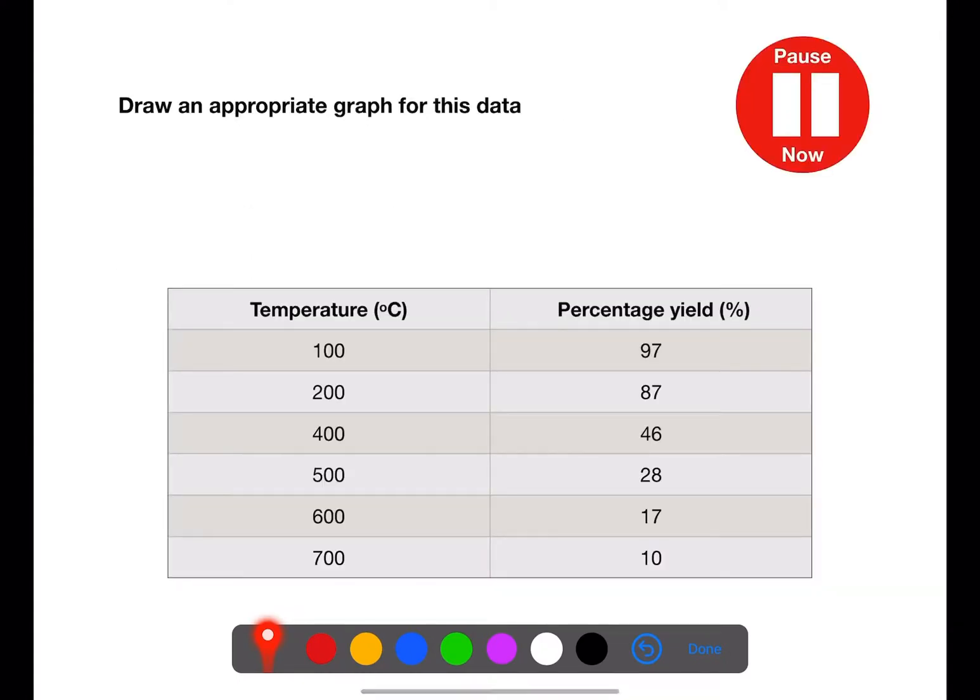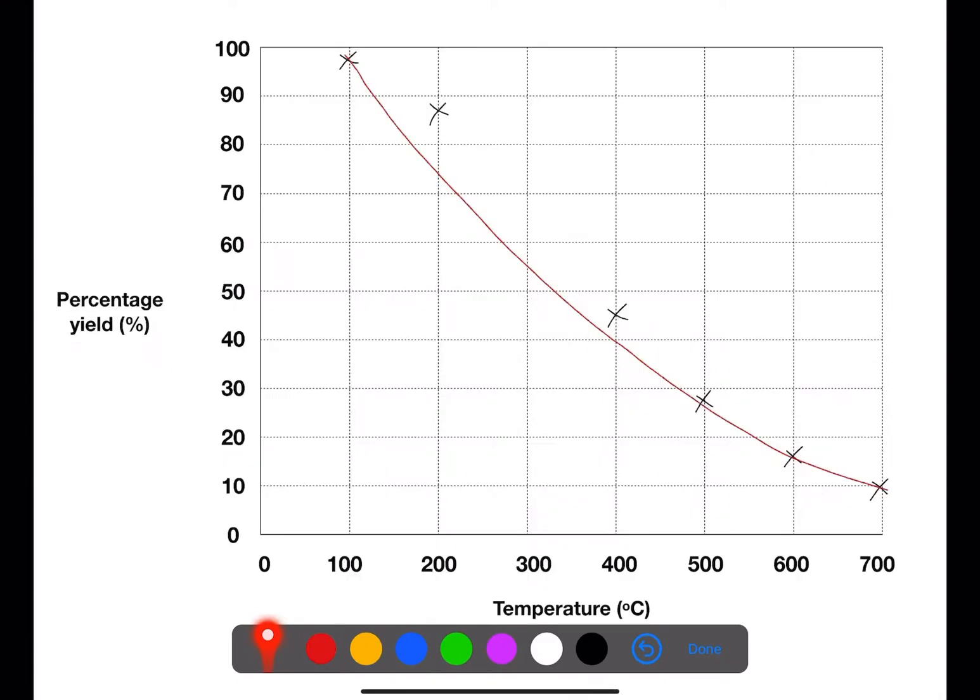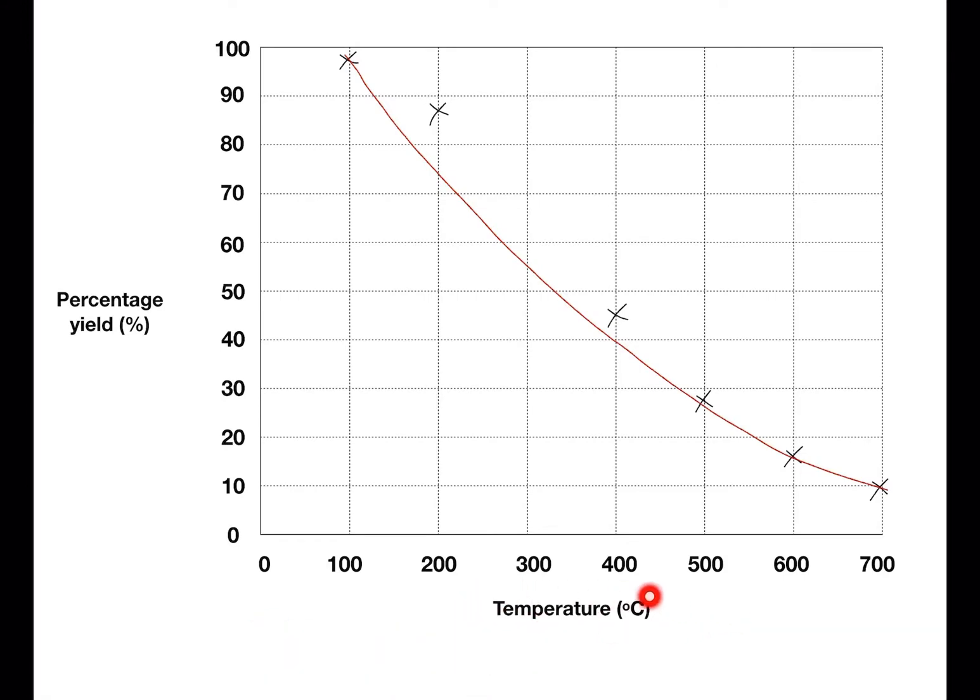Pause the video now and draw an appropriate graph for this data. So the data showed numbers versus numbers. Therefore, a line graph is appropriate. We have our label for the x-axis temperature with degrees C as the units. We have our label for the y-axis percentage yield with percentage as the units. Our scale has gone up in 100s for the temperature and we have gone up in 10s for the percentage yield.